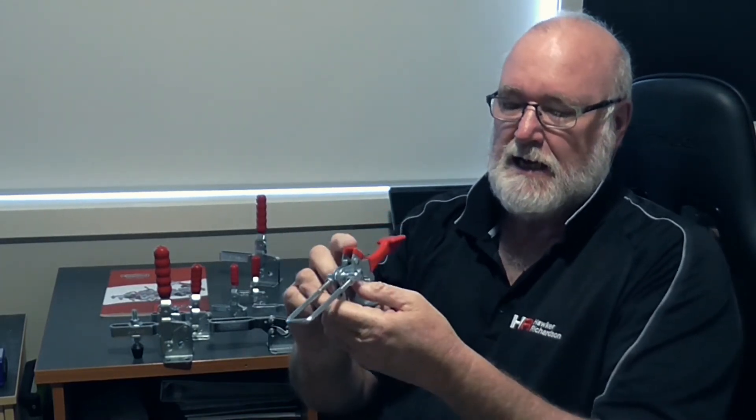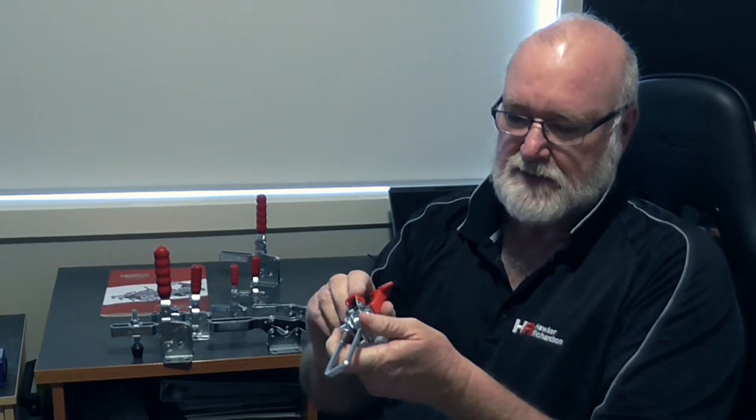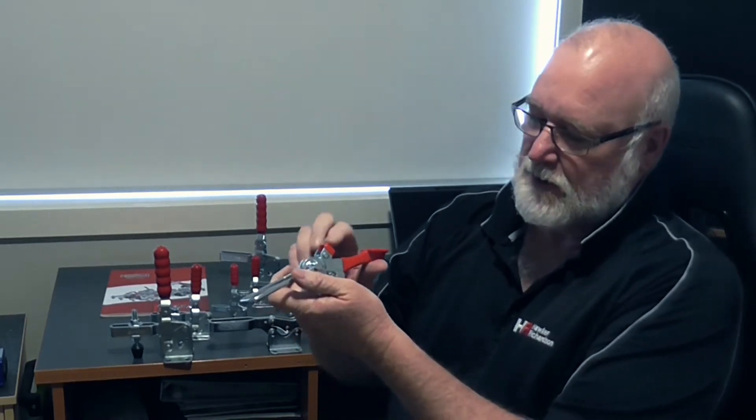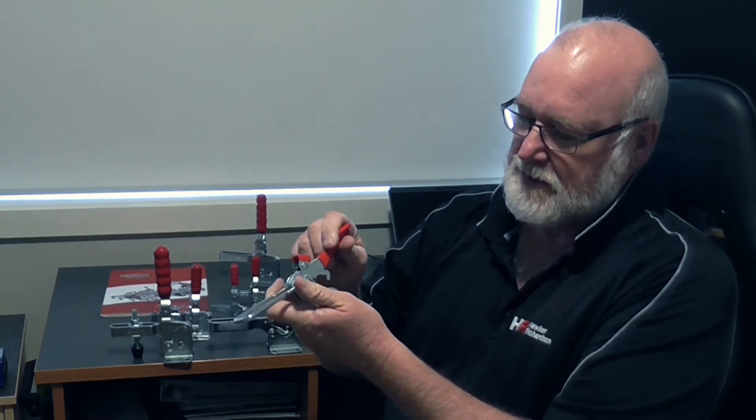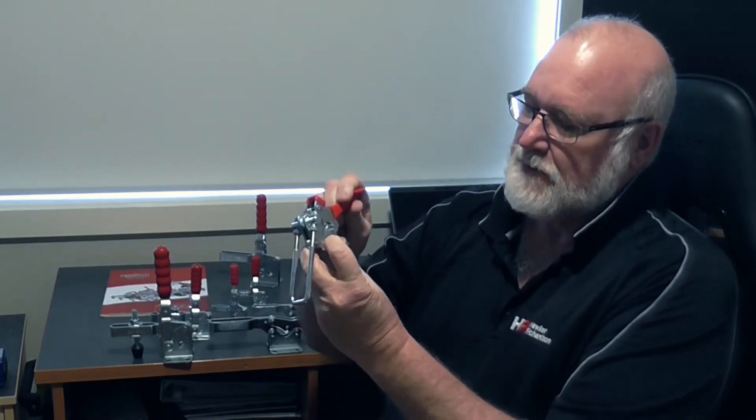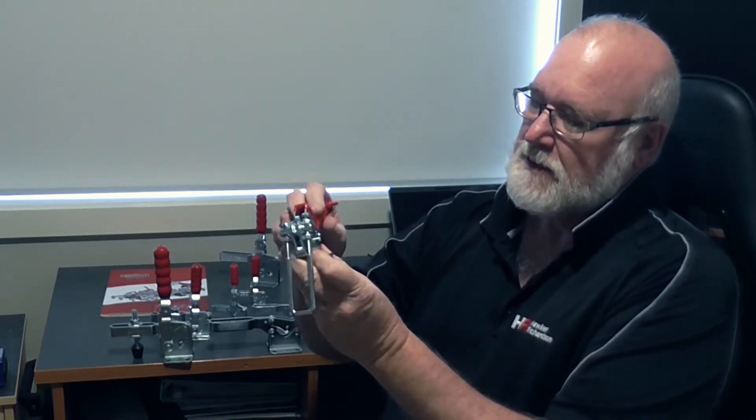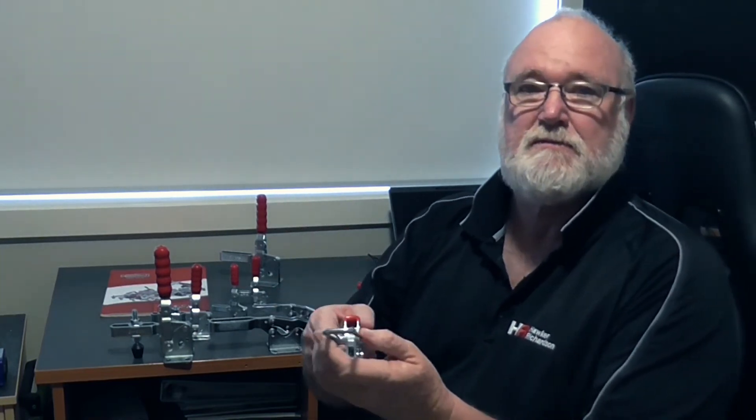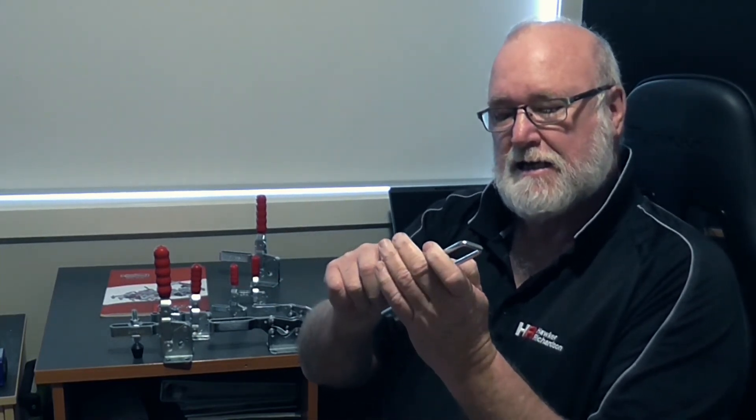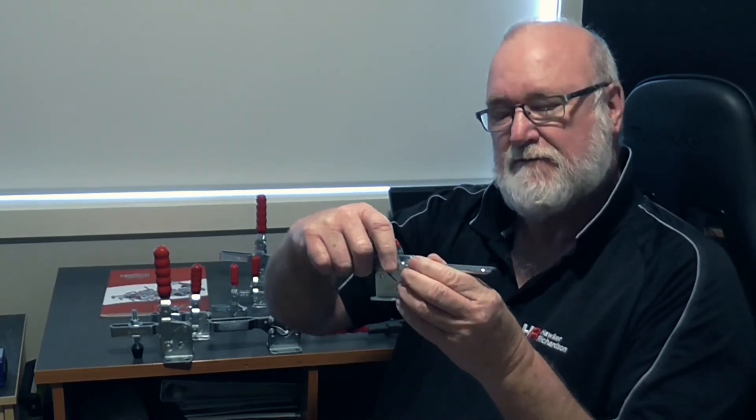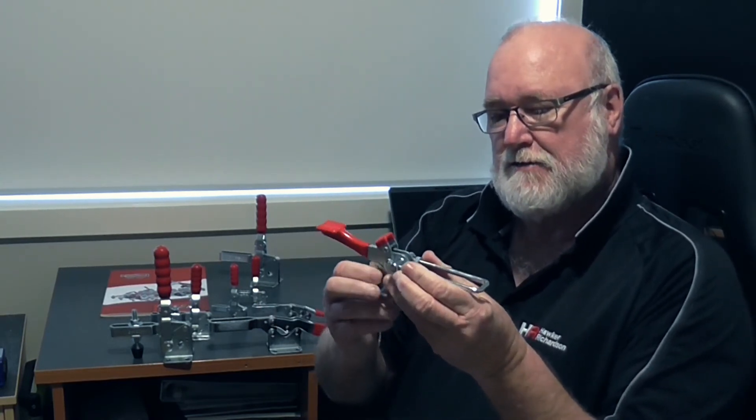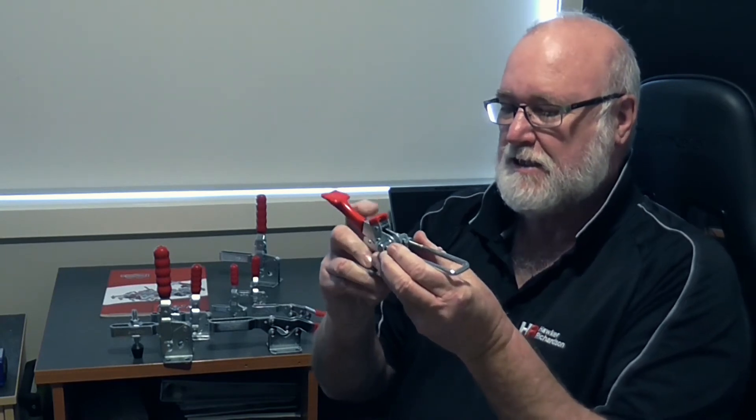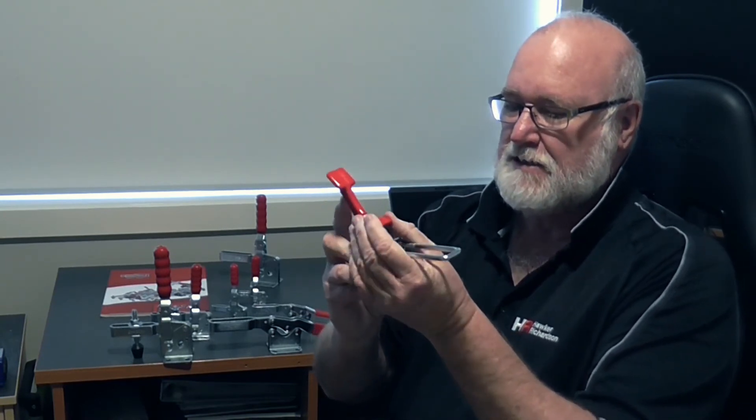This one has, apart from the over-center locking mechanism as with all toggle clamps, a secondary mechanical lock. So this would be used perhaps on some machinery that is involved in heavy vibration and you just don't want this clamp to come undone, so they give it that secondary blocking device.